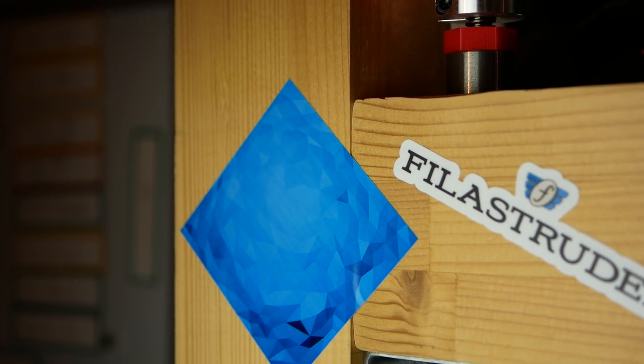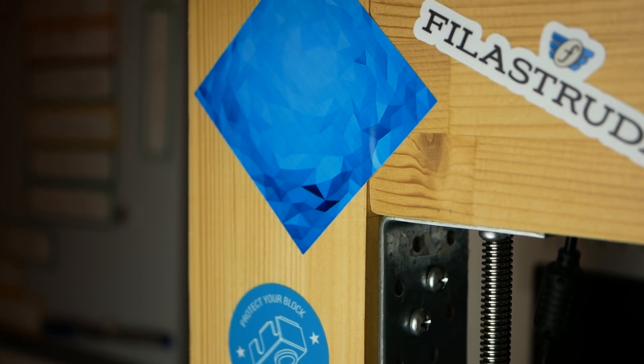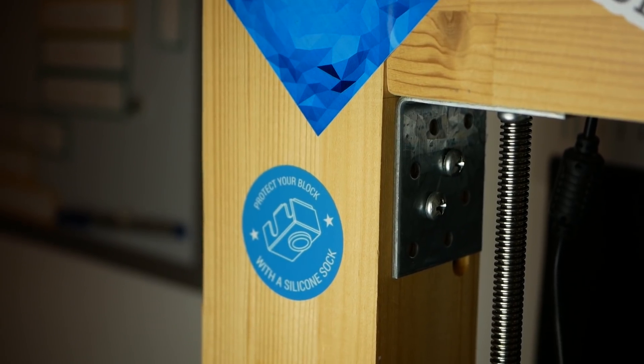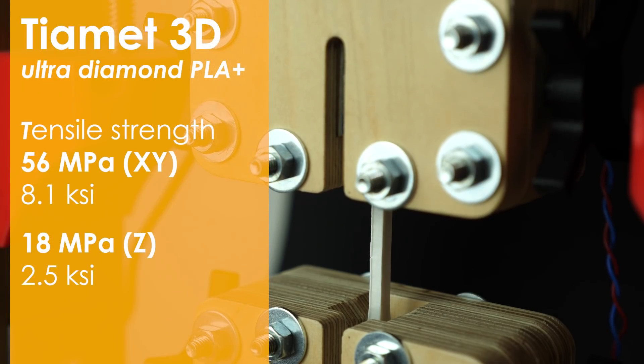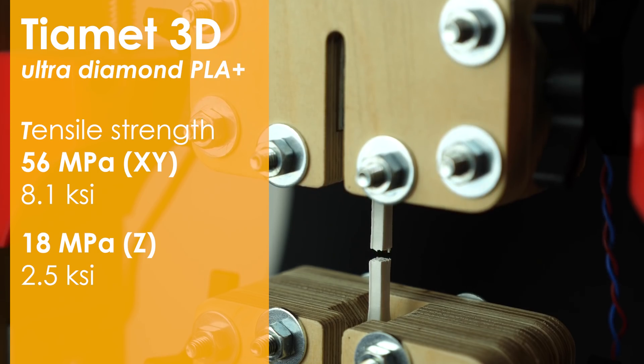If you pay that much the outer appeal is most of the time not the most important thing, so we'll now take a look at the mechanical performance. With a tensile strength of 56 MPa it is not as strong as regular PLA but on the other hand is way more ductile and yields quite a bit before it fails.